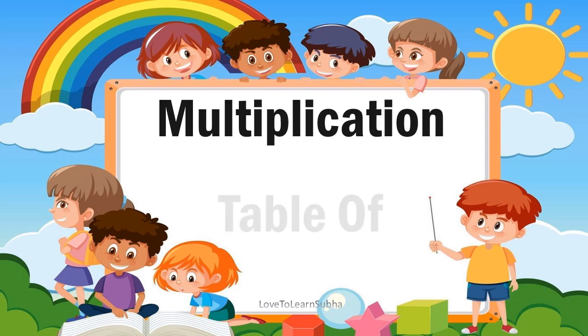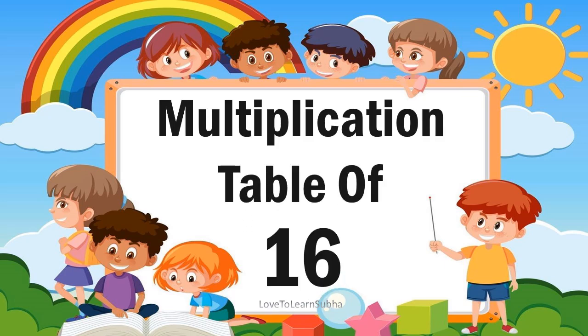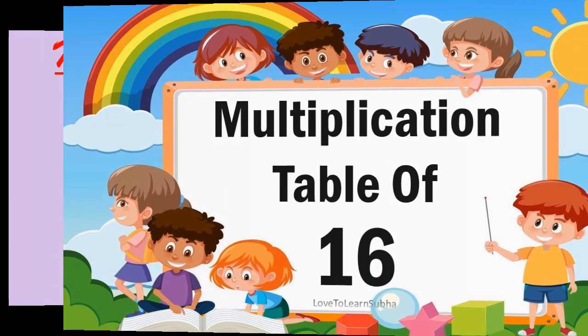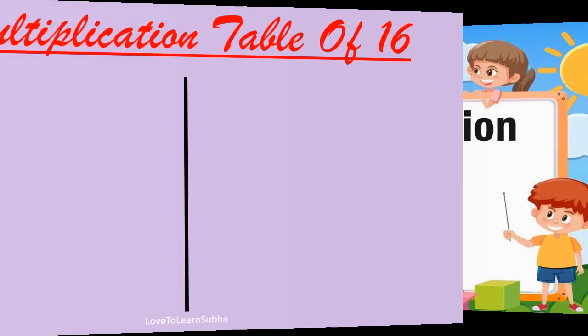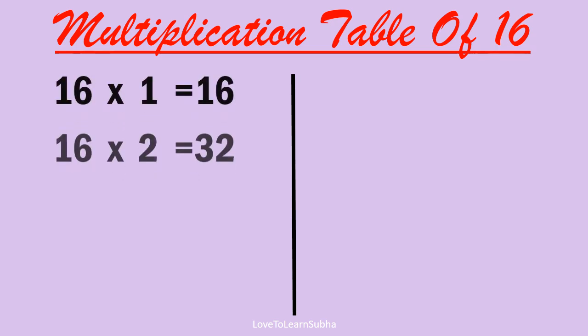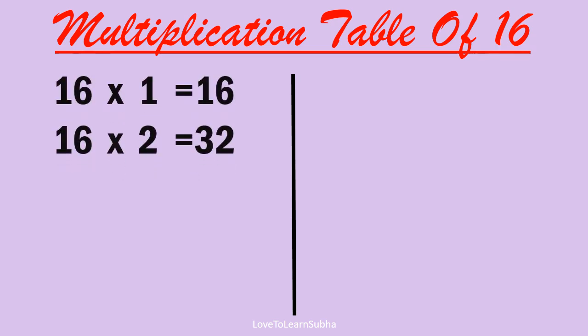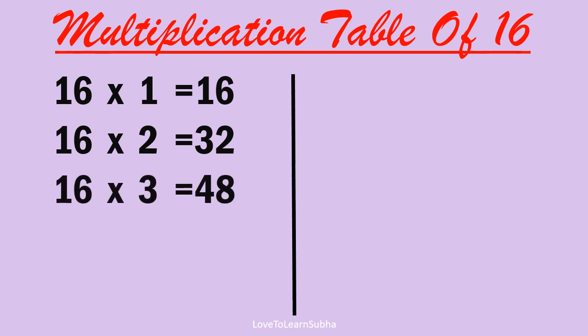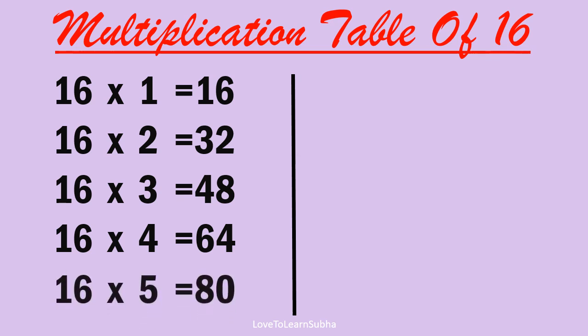Multiplication table of 16. 16 1s are 16, 16 2s are 32, 16 3s are 48, 16 4s are 64, 16 5s are 80.